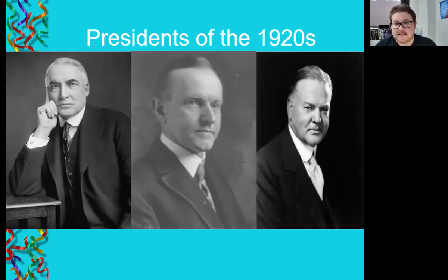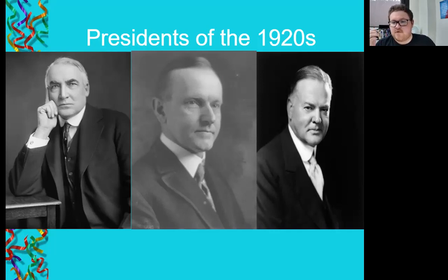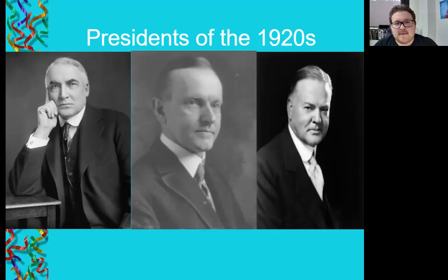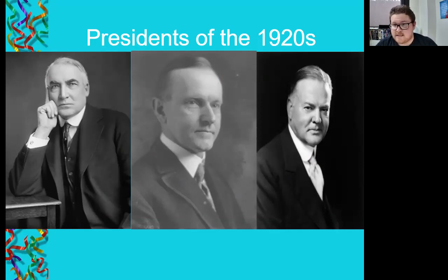Coolidge serves from 1923 until 1929, and his successor is his Secretary of Commerce, Herbert Hoover. Hoover is president for just the last half of 1929, and then the Great Depression hits. Hoover is pretty complicated in history. I had a history teacher once call Hoover the vacuum cleaner because he sucks that bad as a president, but I feel like we can disagree on that — Hoover is really thrown into a very complicated situation. Nonetheless, these are our three guys for the 1920s.